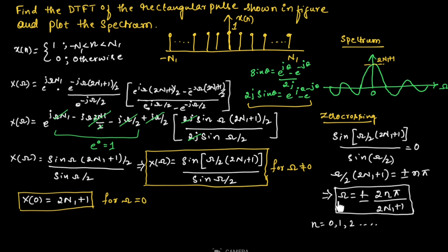Using this we can write the zero crossing values by putting different values for n from 0, 1, 2 and so on. For n equal to 0, ω equals 0. For n equal to 1, ω equals 2π divided by (2n1+1). Towards the left hand side we get minus 2π divided by (2n1+1). For n equal to 2 we get 4π divided by (2n1+1), and for n equal to 3 we get 6π divided by (2n1+1). This is how you can find the zero crossing values. This is about the problem on DTFT for a rectangular pulse. Hope you have understood the problem. Thank you.